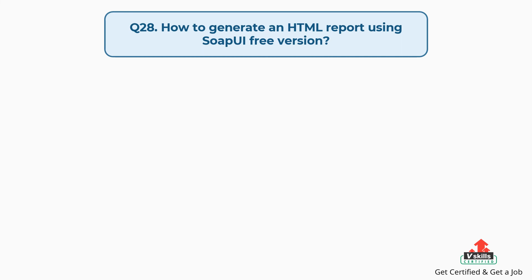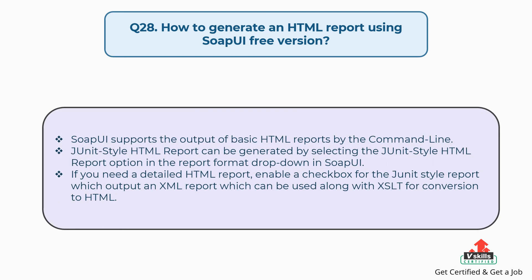Question number twenty-eight: How to generate an HTML report using SOAP UI free version? SOAP UI supports the output of basic HTML reports by the command line. A JUnit-style HTML report can be generated by selecting the JUnit style HTML report option in the report format dropdown in SOAP UI. If you need a detailed HTML report, enable a checkbox for the JUnit style report which outputs an XML report that can be used along with XSLT for conversion to HTML.